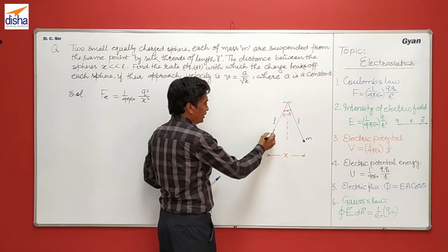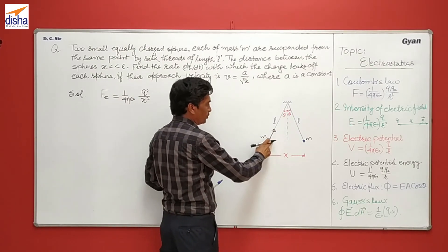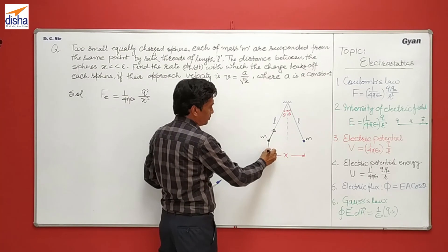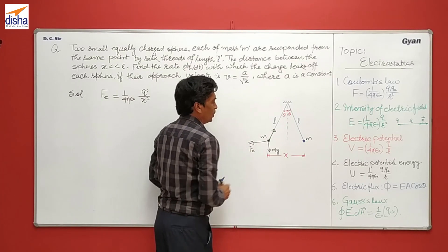Now you draw the free body diagram. The tension is in each of them. You can draw the free body diagram for any of them. So weight of this, and the electric force between them, Fe.